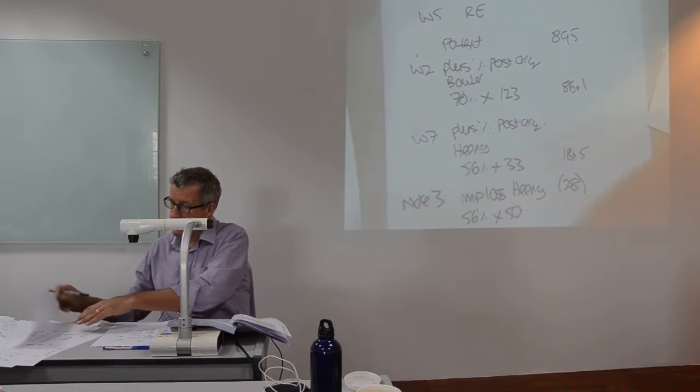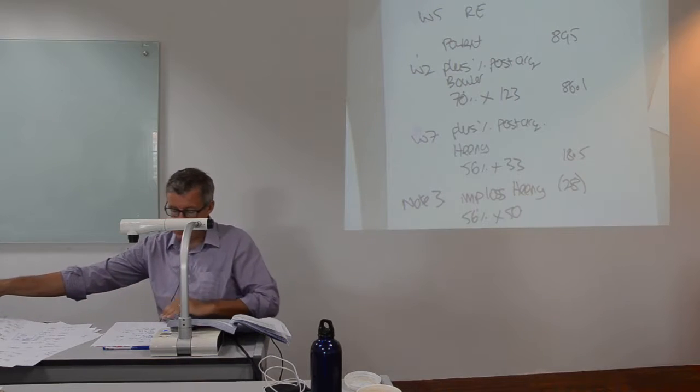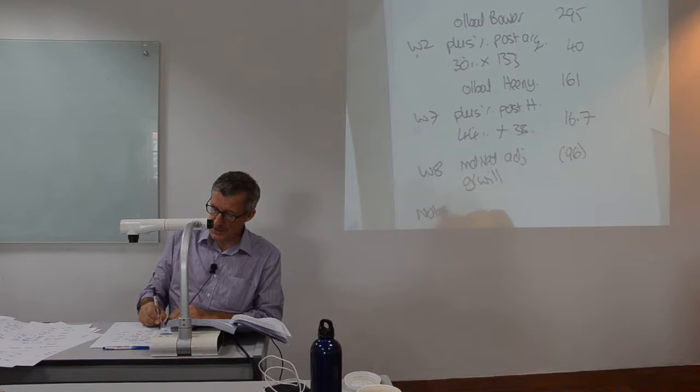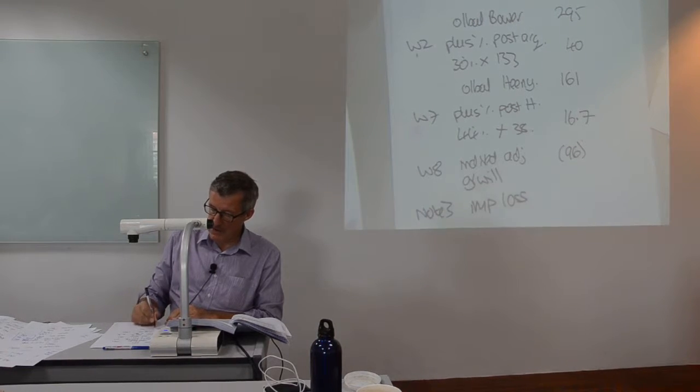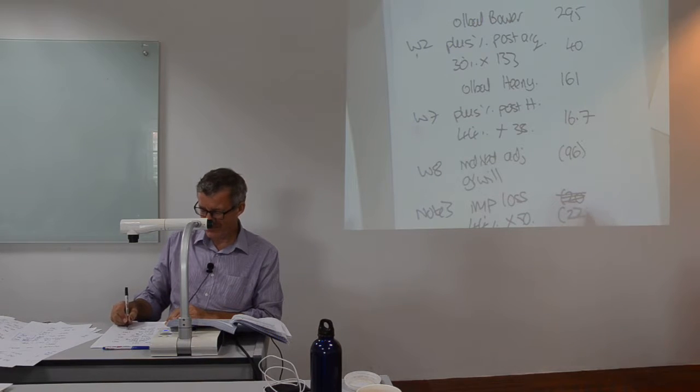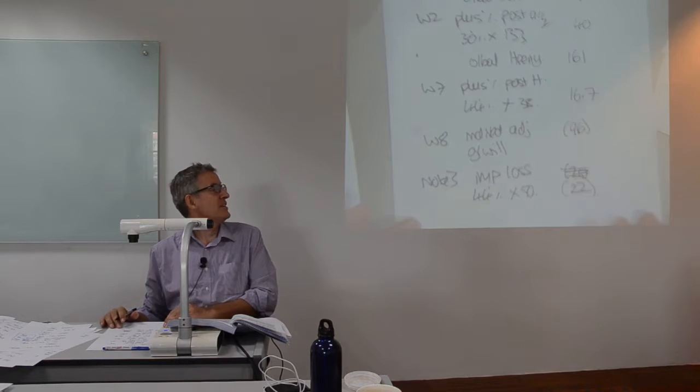Now, in terms of my NCI, I need to find my NCI, and in my NCI working, reference it to note number three. There is an impairment loss, and the share of that impairment loss that you're charging is 44% of 50, and 44% of 50 is 22.